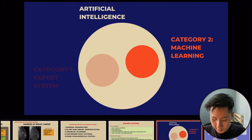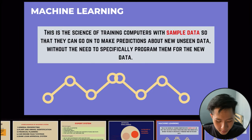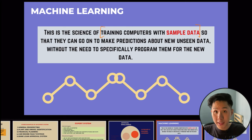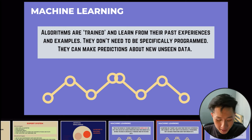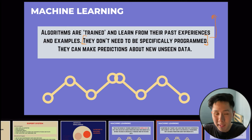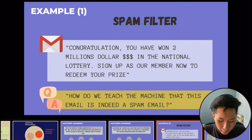The second category of AI is machine learning, which is a little different from expert systems. Instead of many rules, machine learning uses data points to create models from which results can be predicted. The definition: machine learning is the science of training computers with sample data so that they can make predictions about new, unseen data without needing to be specifically programmed for new data. Algorithms are trained from past experiences and examples — they don't need rule-based programming like if-then statements.